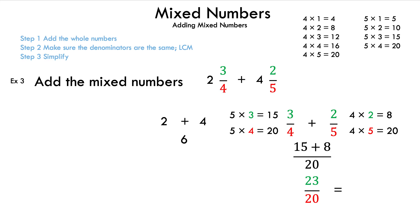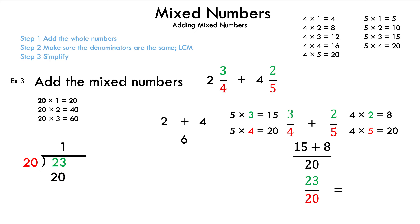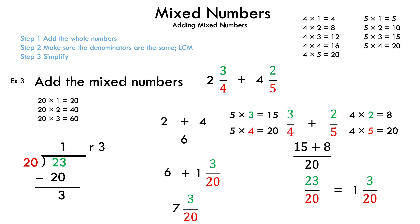Since we have an improper fraction, we need to use long division to find our mixed number. We write down the multiples of 20 and pick the closest multiple of 20 to 23 without going over, and that is 20. We use the two factors in our answer: 20 times 1. Write the 1 above, 20 below, subtract 23 and 20 to get 3, and that is our remainder. So we use the 1, the 20, and the 3 — our mixed number is 1 and 3/20. Add that to the 6, and 6 plus 1 is 7, and our answer is 7 and 3/20.